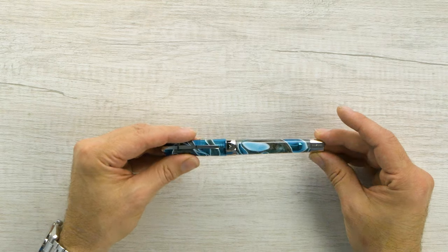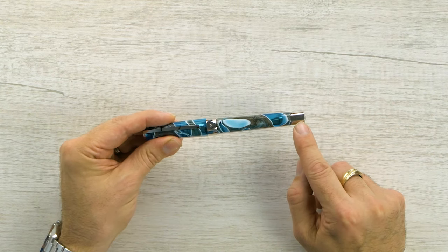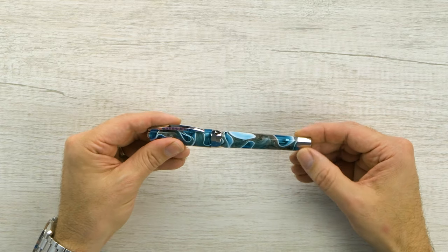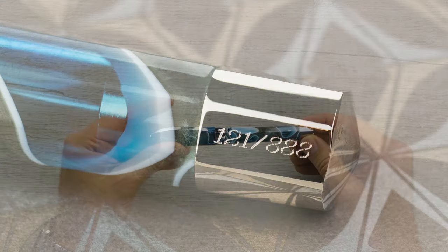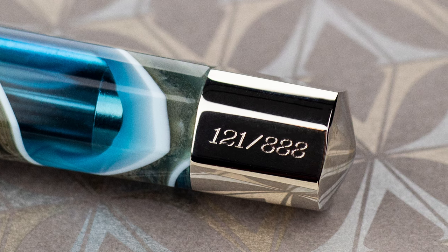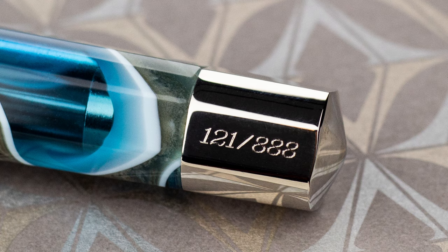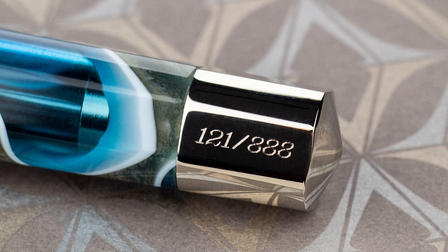It is a limited edition. 888 pieces. It is marked here on the end of the knob. So we've got a metal power reservoir knob here. On the top, we have your standard Visconti coin. Of course, you can replace that with any of the MyPen system initials or the jewels.